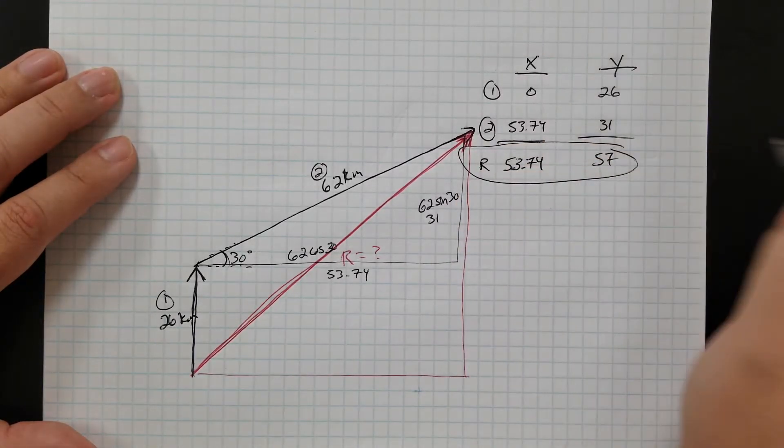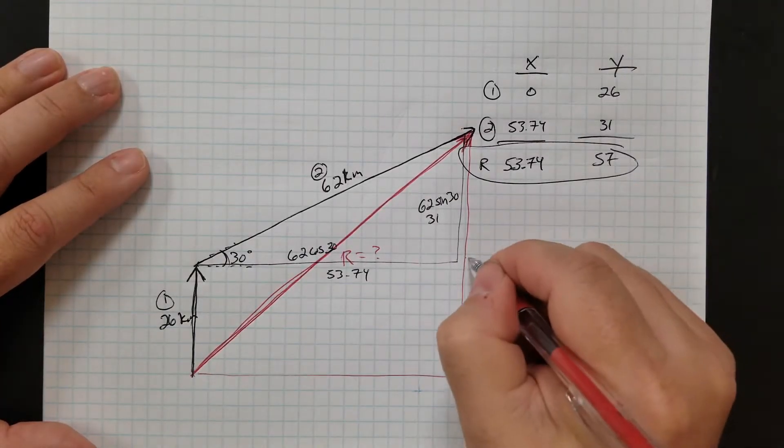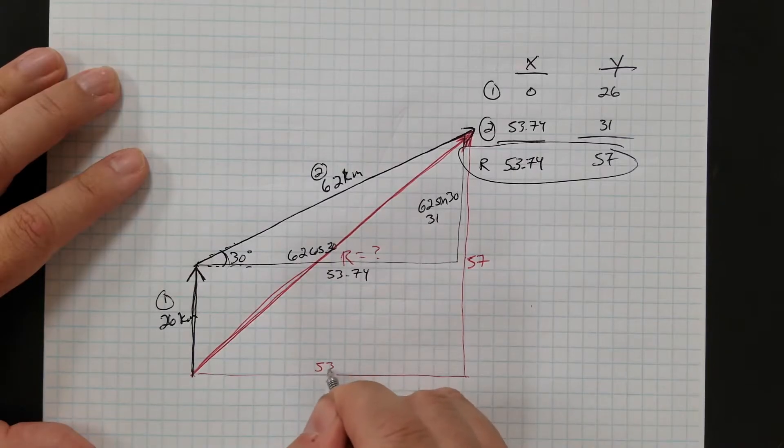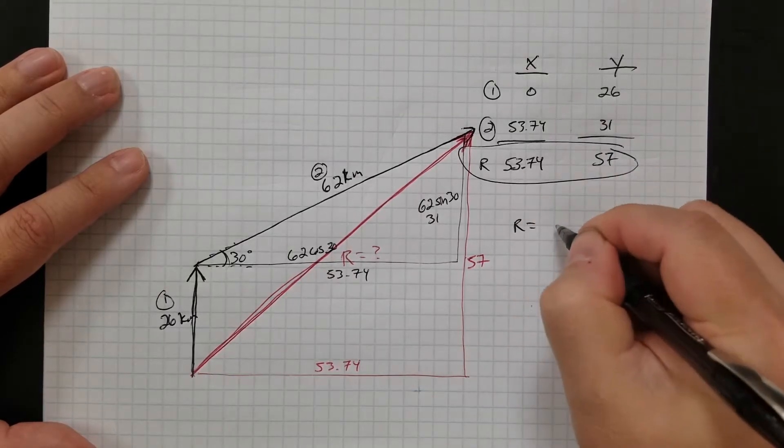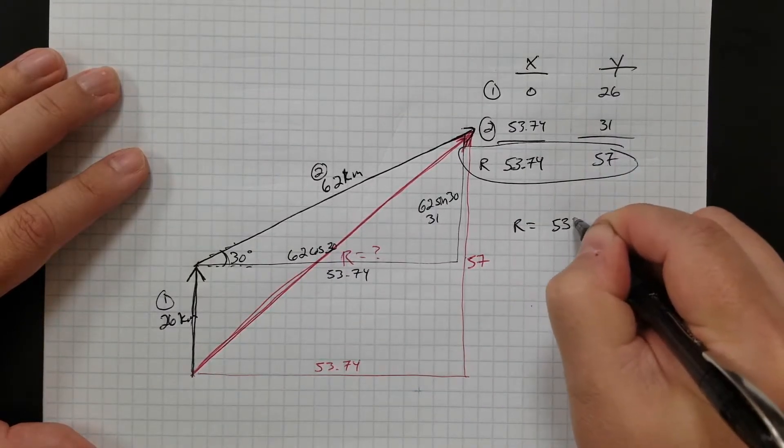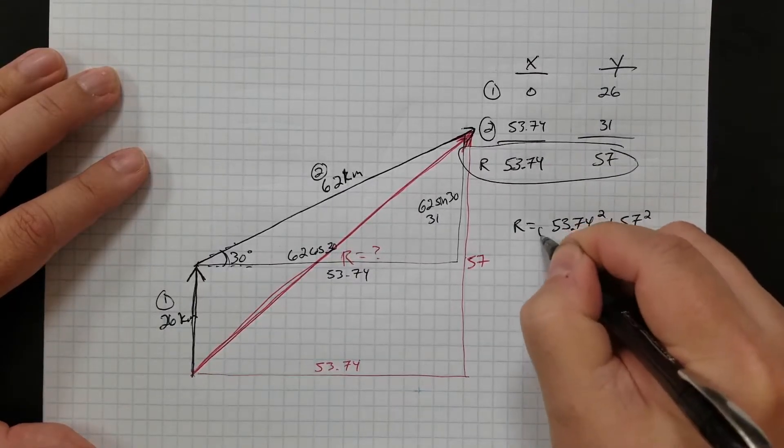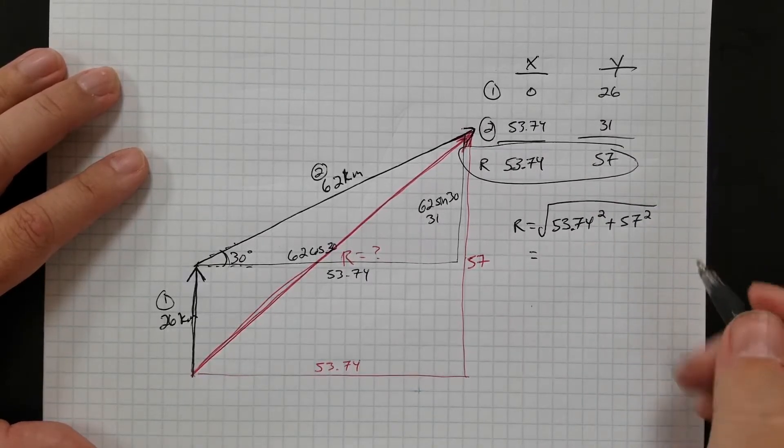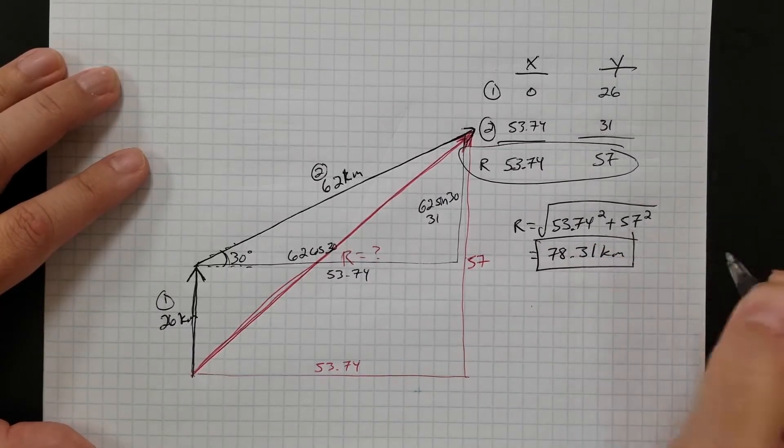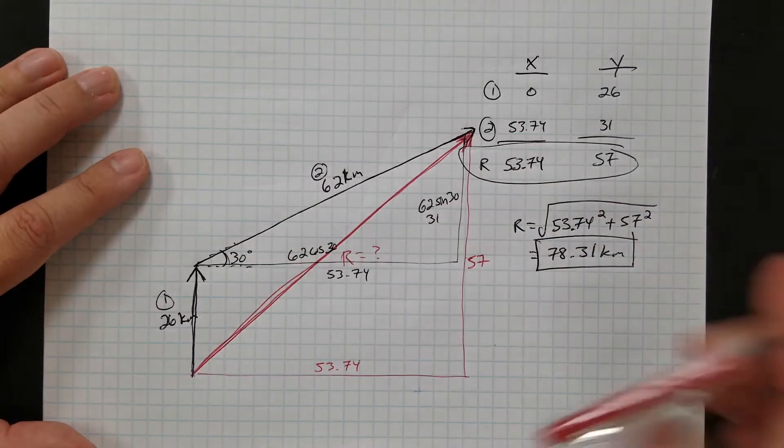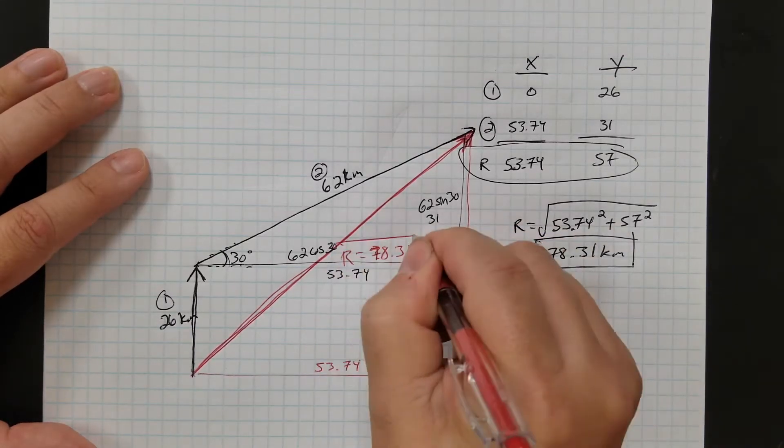So 26 plus 31 is 57 and 53.74 plus 0 is 53.74. So this is the dimensions for r. All right, so now r is 57 in the y and 53.74 in the x. So I can do r is square root of a squared plus b squared, so 53.74 squared plus 57 squared, square root that. And if you do this in your calculator, you get 78.31 kilometers. So that's how long r is. R is, let me do it in red, 78.31 kilometers.